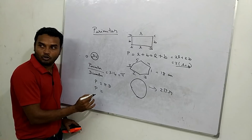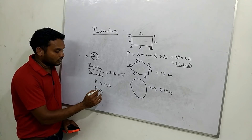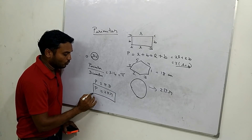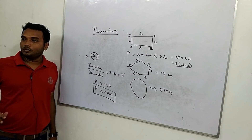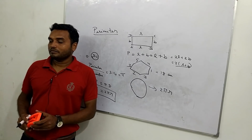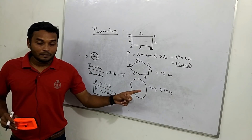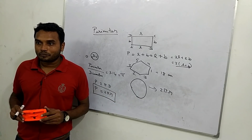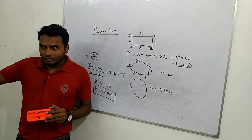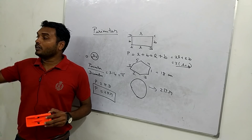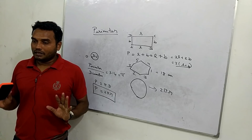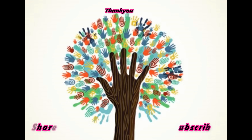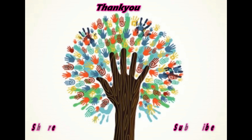Perimeter is equal to pi times diameter, which equals 2πr. Perimeter is always a constant value. Perimeter is the outer boundary — the complete total length. We'll see you next time.